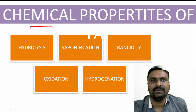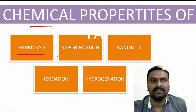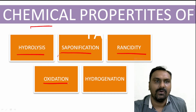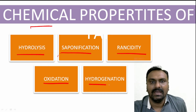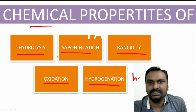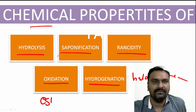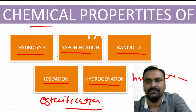Coming to the chemical properties of the fatty acids, these include hydrolysis, saponification, rancidity, oxidation, hydrogenation, halogenation, and esterification. We will see each of these properties one by one.